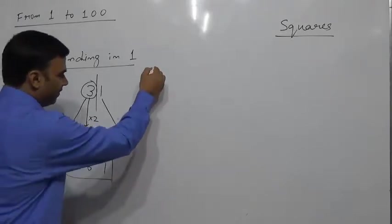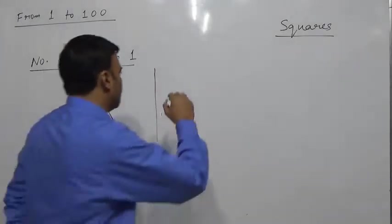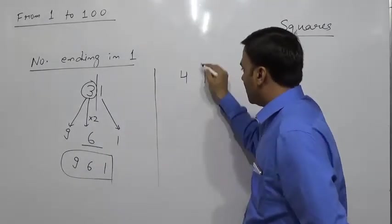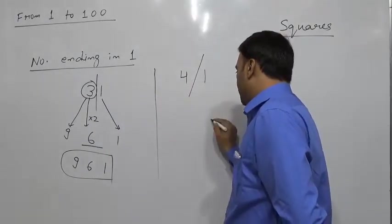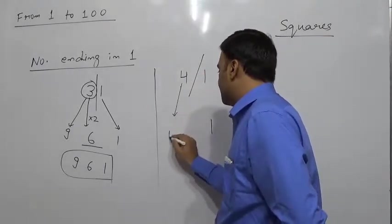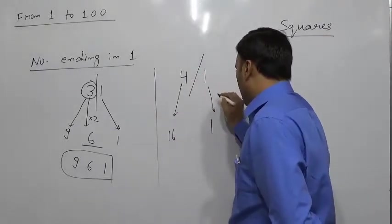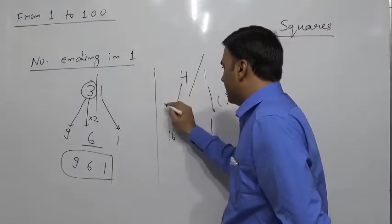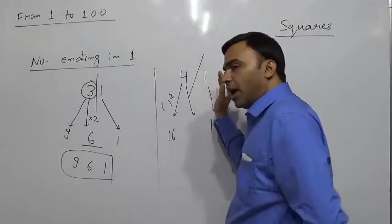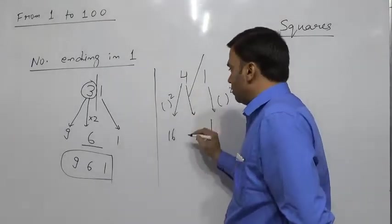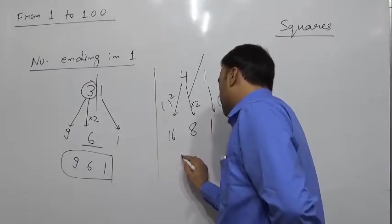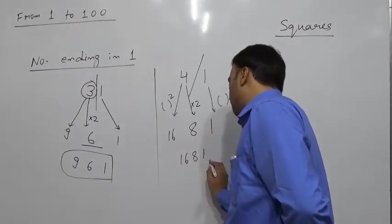Let us take another example. Suppose we have to find the square of 41. Separate 1 from the number: square of 1 is 1, square of 4 is 16, and the middle part is 4 × 2 = 8. So the answer is 1681.